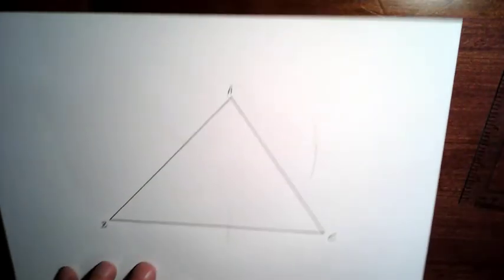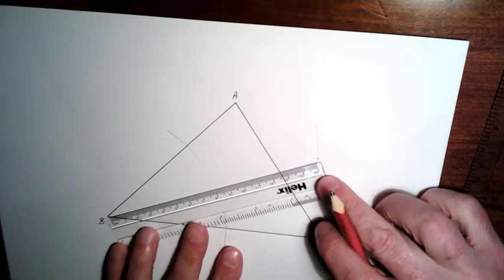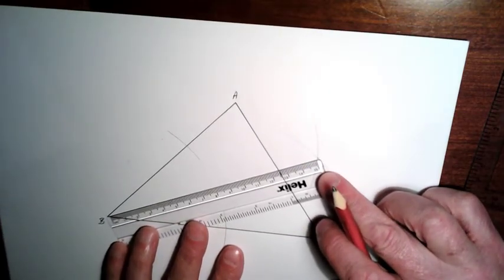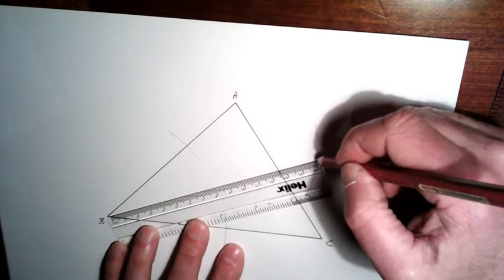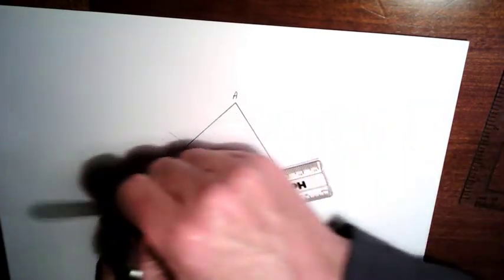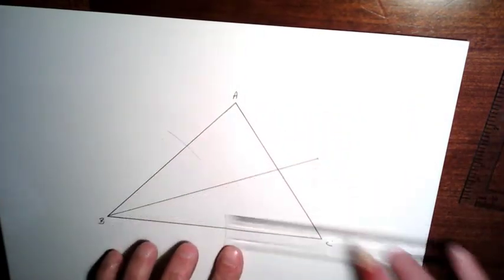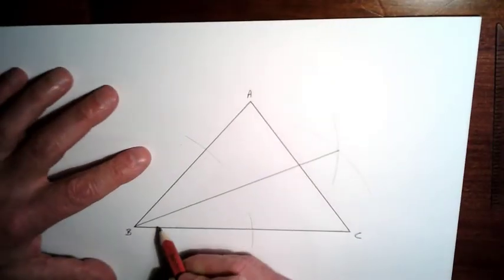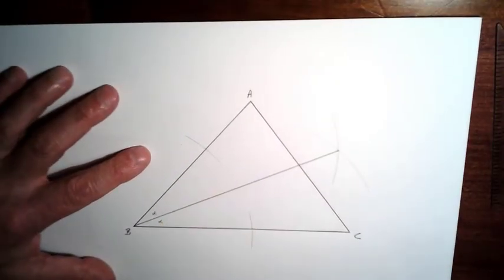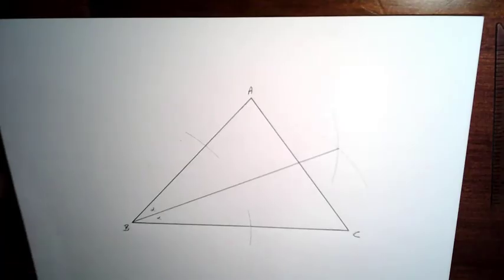So what we're going to do now is just get our ruler and connect these up. So we're going to connect that point there up to B. And you should find that that angle there and that angle there are exactly the same size. So what we're going to do next is do exactly the same thing again.